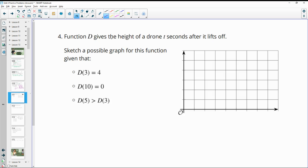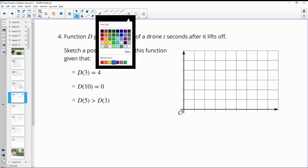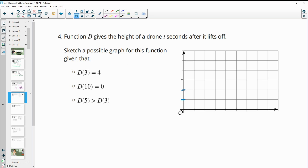Number four, function D gives the height of a drone in seconds after it lifts off. Sketch a possible graph for this function given the following three things. So we need D(3) to equal 4. So let's look at this output. We've got 1, 2, 3, 4, 5, 6 lines here. So I'm going to have this just count by 1. So 1, 2, 3, 4, 5 would be right here.